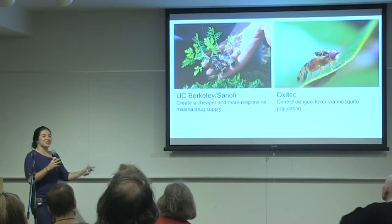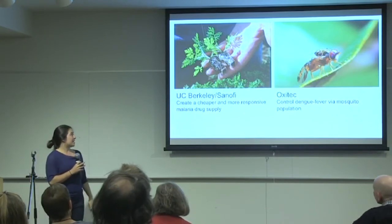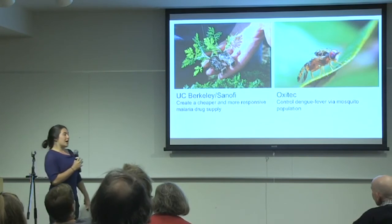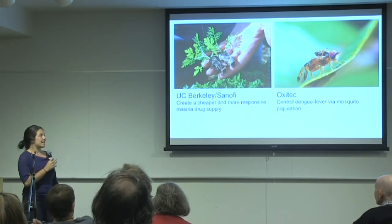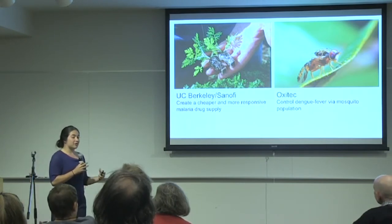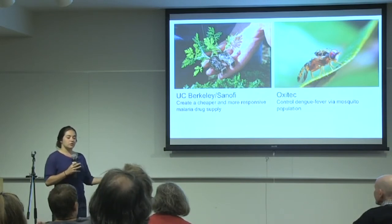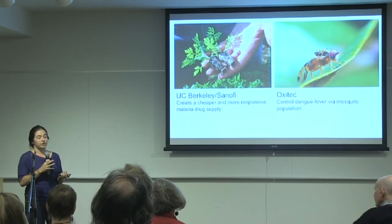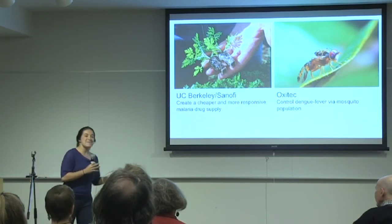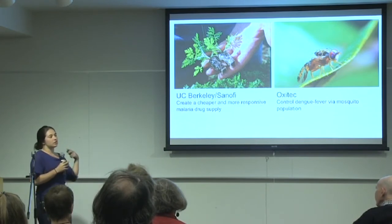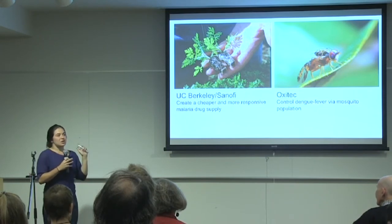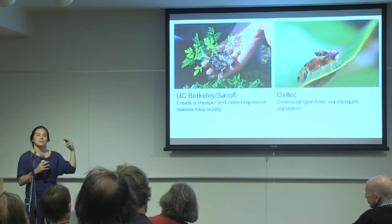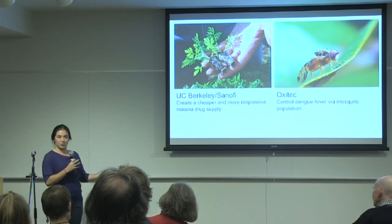Examples of things actually happening with synthetic biology: one example is a project started at UC Berkeley and now Sanofi, a pharmaceutical company, is taking over — the production of artemisinin. This is a malarial drug generally made from a wormwood plant, which takes a long time to grow. What this group led by Jay Kiesling at UC Berkeley did was take the pathway to produce the therapeutic molecule, put it into E. coli first, and then into yeast. By doing that, you're able to create lots of the drug more quickly and at a more controlled rate, so you don't have to worry about supply and demand fluctuations and lag time to grow wormwood plants.